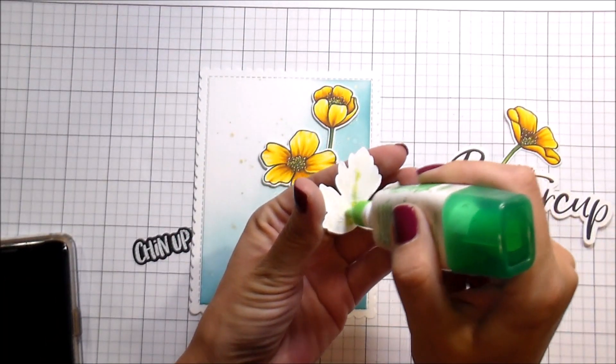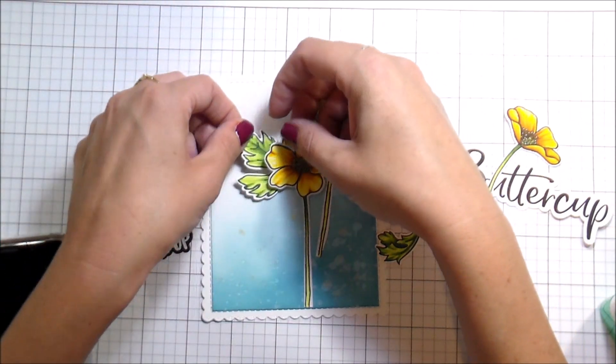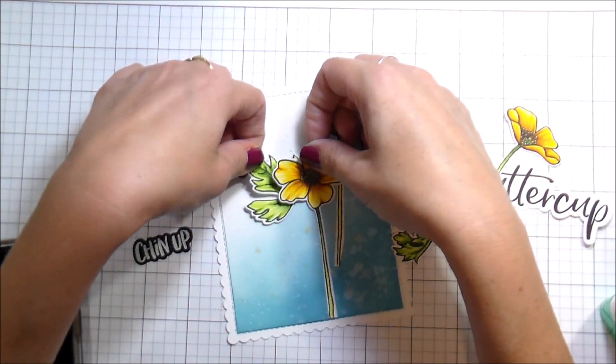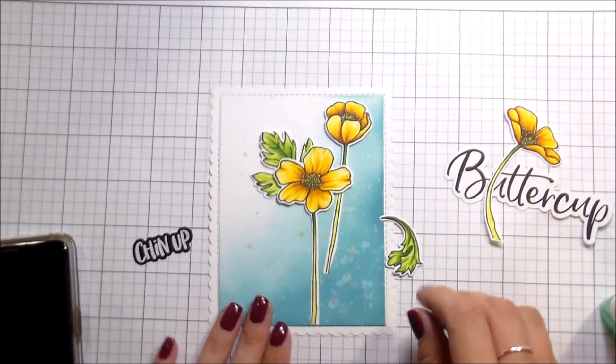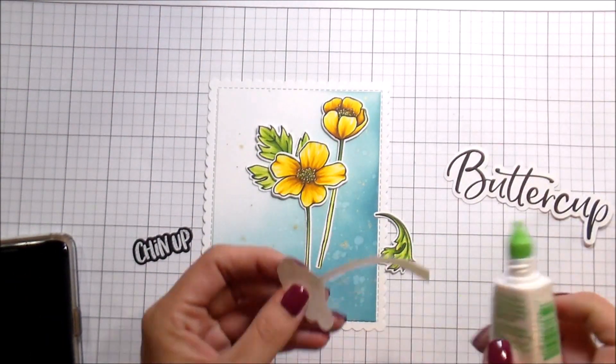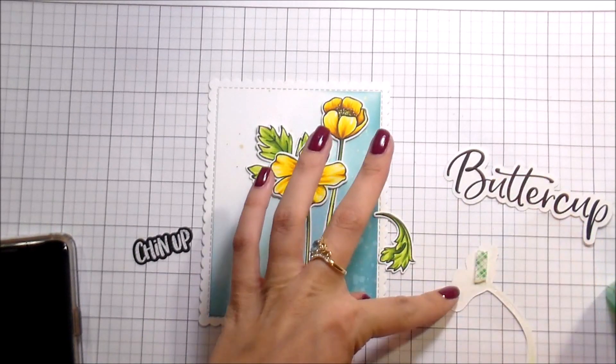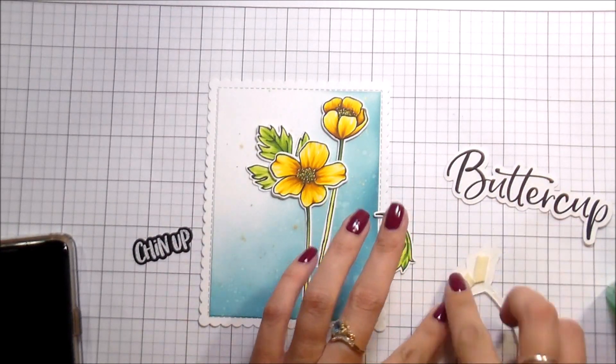To get some dimension and not have to worry about all the little finicky bits - you guys know that I don't like that - I popped up the actual bloom and then I glued down the stems. The leaves were just glued down flat. I put multi-glue on the back of them and then just tucked them behind where I wanted them to go.